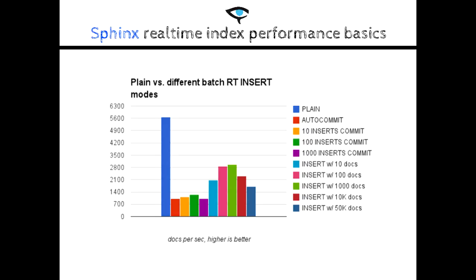This chart illustrates the indexing rate for plain indexes and for RT indexes, using different insert methods. The test included only a batch of 100,000 documents, small enough to not trigger a RAM chunk flush. Since there was no flushing and no disk I/O, the speed could only be influenced by the CPU core power. Batch inserting speed with RT indexes will be, in the best case, somewhere around half the indexing rate of a plain index. However, in the real world, this will be even lower.